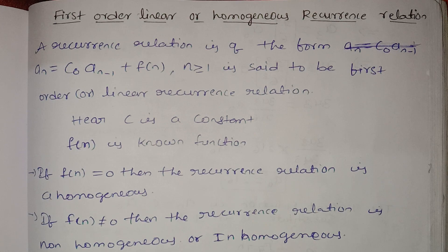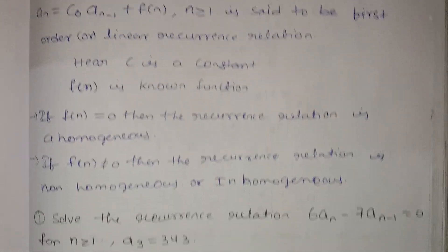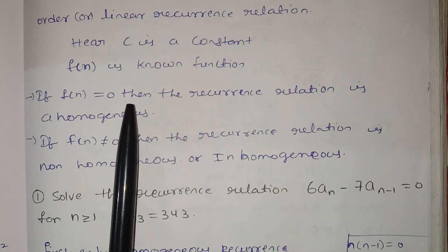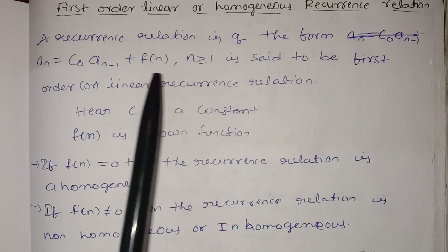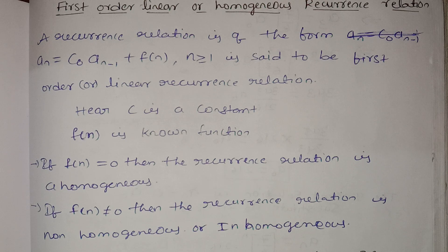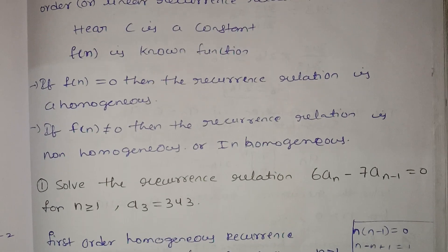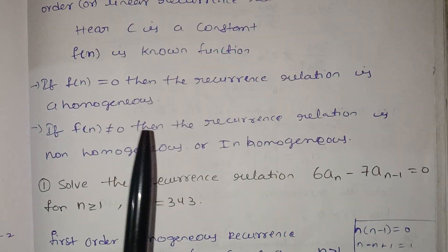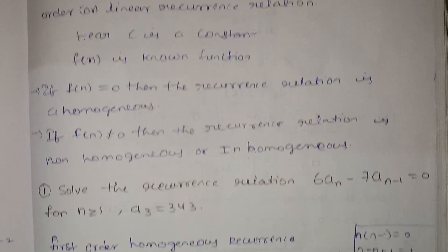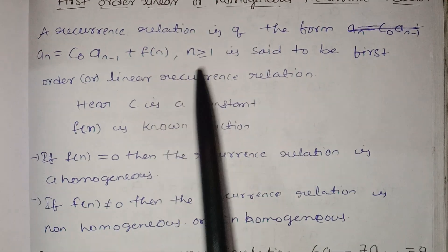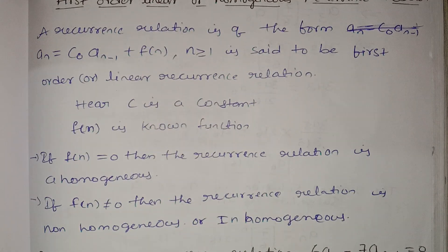We call it a homogeneous recurrence relation when f(n) = 0. If f(n) equals 0, we call it a homogeneous linear recurrence relation. If f(n) is not equal to 0 — that is, f(n) contains some numbers — then the recurrence relation is called non-homogeneous or inhomogeneous.